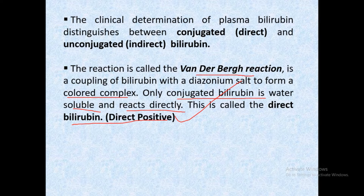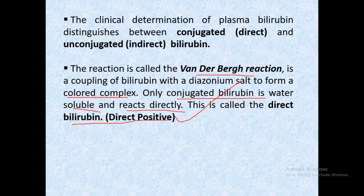In the case of conjugated bilirubin, reaction with diazonium salt gives an immediate color change — this is a direct positive result. This is seen in conditions where conjugated bilirubin is elevated, that is, in post-hepatic jaundice.